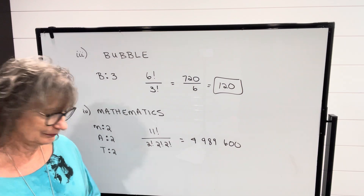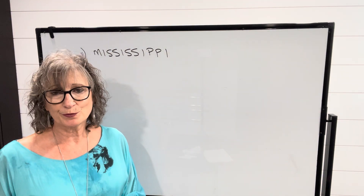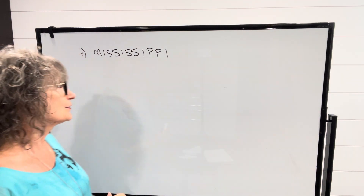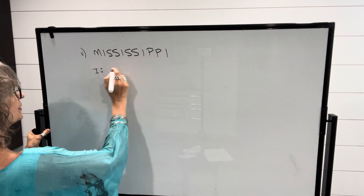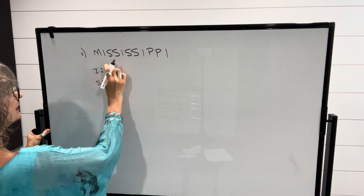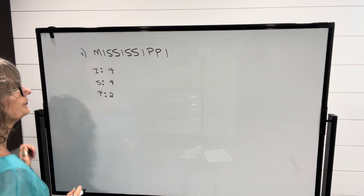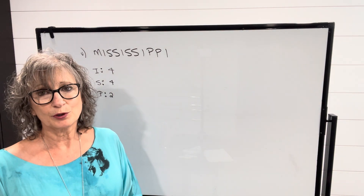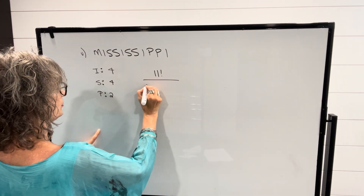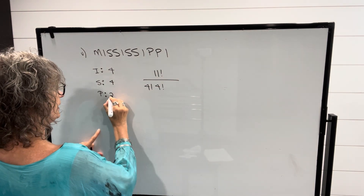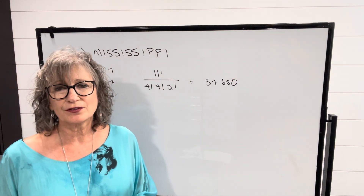A classic example you're probably going to see is the word 'Mississippi.' M appears only once, I appears four times, S appears four times, and P appears two times. To calculate the number of permutations we take the total number of letters — 11 factorial — divide by four factorial for I, divide by four factorial for S, and divide by two factorial for P. When you do the calculation you get thirty-four thousand six hundred and fifty distinct arrangements.